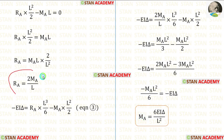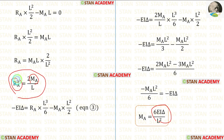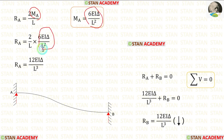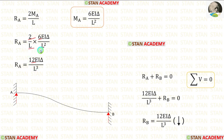Now, instead of MA, we can apply this value and find out RA. You can see that instead of MA, I have applied this value. 2 into 6, we will get 12.